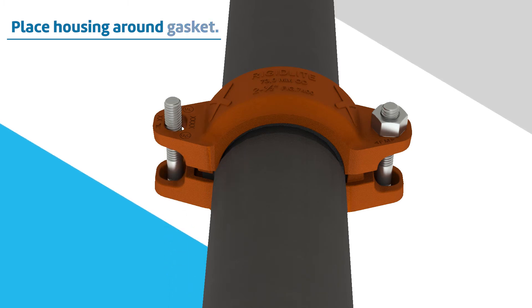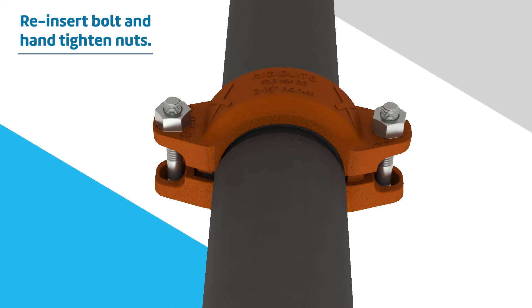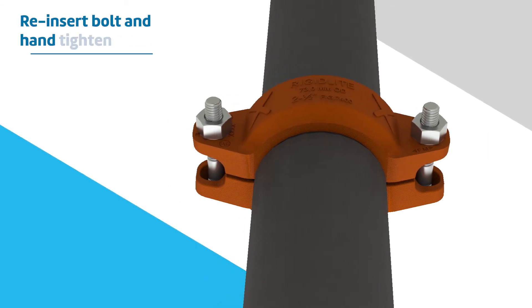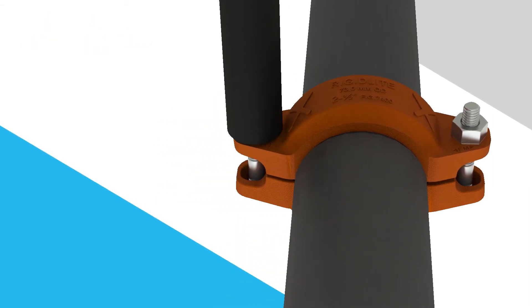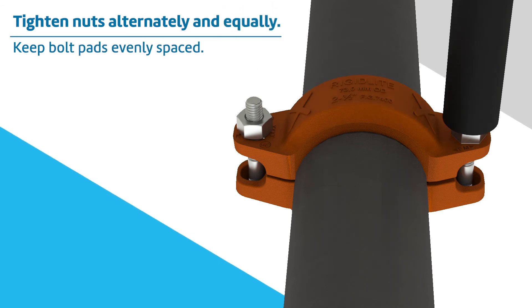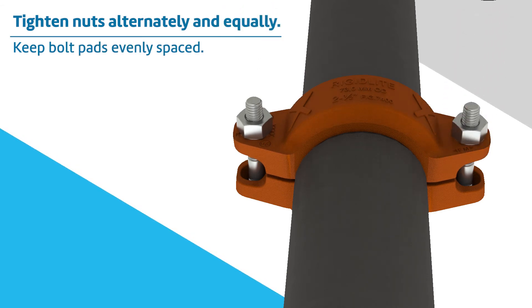Reinsert the bolt and hand tighten both nuts evenly on either side of the coupling. Securely tighten nuts alternately and equally, keeping the gaps at the bolt pads evenly spaced.